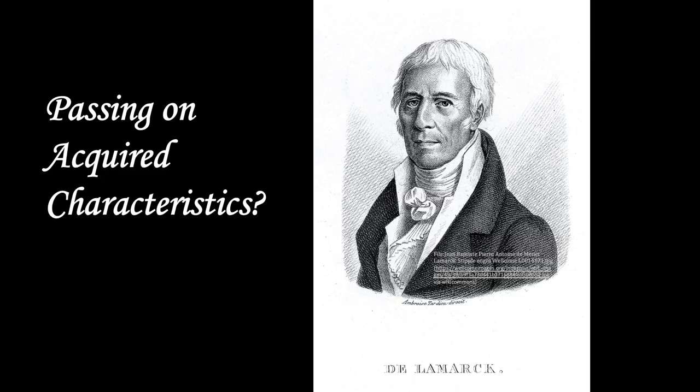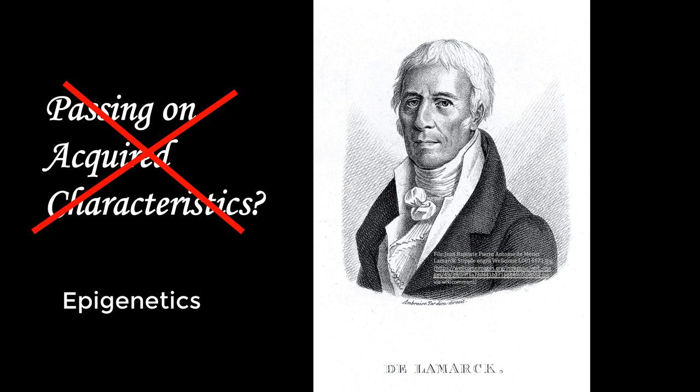Lamarck's theory was generally considered incorrect, as we now know that genes are inherited from parents to offspring. Recent studies in the field of epigenetics, however, are suggesting that some portions of DNA expression may be inherited that are not part of the DNA. Thus, on rare occasions, perhaps part of Lamarck's theory may work. But anyway, back to Charles Darwin.